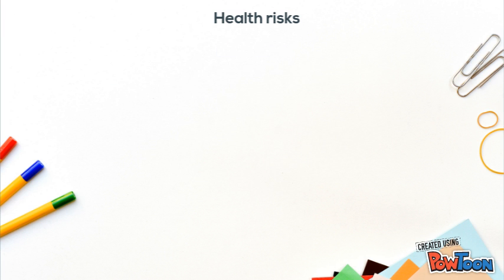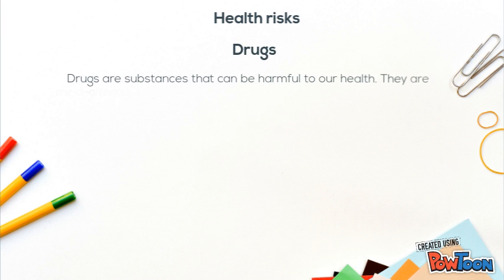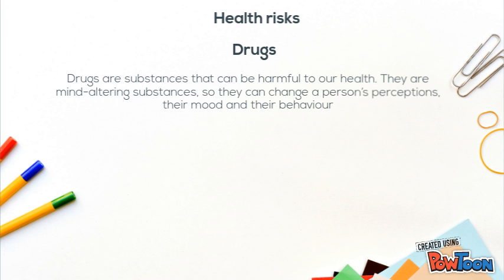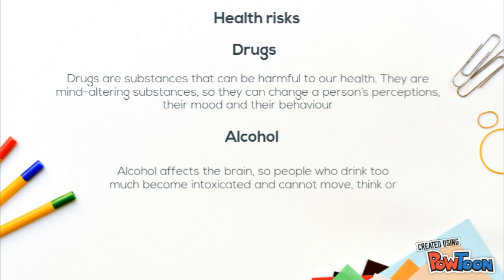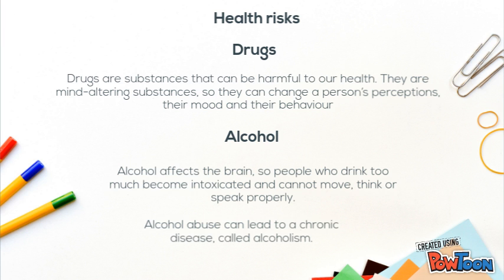We also have to talk about drugs. Drugs are substances that can be harmful to our health. They are mind-altering substances, so they can change a person's perceptions, their mood, and their behavior. Alcohol is another drug and affects the brain, so people who drink too much become intoxicated and cannot move, think, or speak properly. Alcohol abuse can lead to a chronic disease called alcoholism.